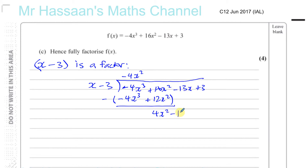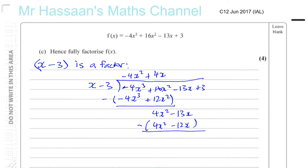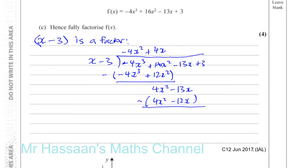Bring down the next term, which is minus 13x. Then you say x times something gives me 4x squared — well, that's plus 4x. So 4x times x is 4x squared, and 4x times minus 3 is minus 12x. We've got to be very careful now when we subtract. What you have to realize is you've got minus 13 minus minus 12. Minus 13 becomes minus 13 plus 12, which is minus x, minus 1x.